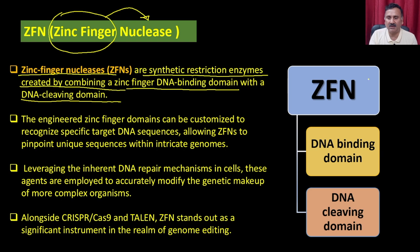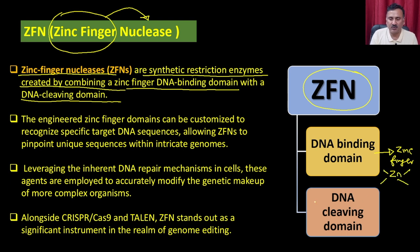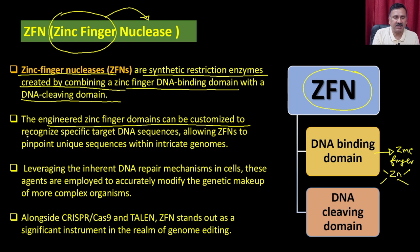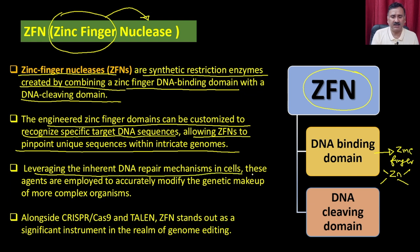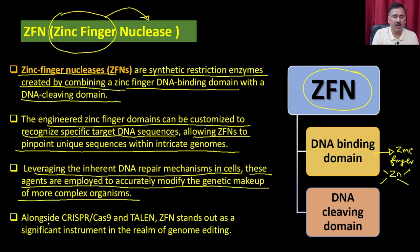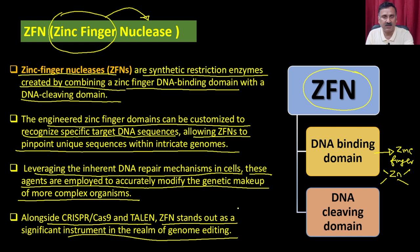In a typical zinc finger nuclease, you have a DNA binding domain from the zinc finger — with zinc coordinated by histidine and cysteine — and a DNA cleavage domain attached. It acts like a restriction enzyme that cuts a particular part of DNA. The engineered zinc finger domain can be customized to recognize a specific target sequence, allowing the zinc finger nuclease to pinpoint unique sequences within the genome. Alongside CRISPR-Cas9 and TALENs, ZFNs stand out as significant instruments in genome editing.